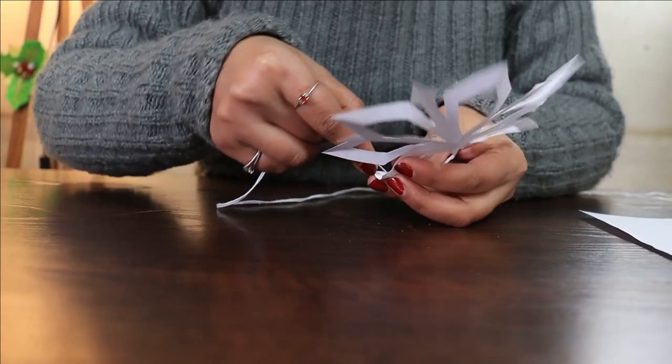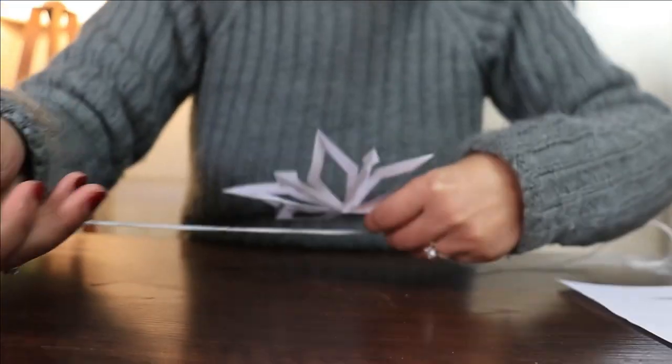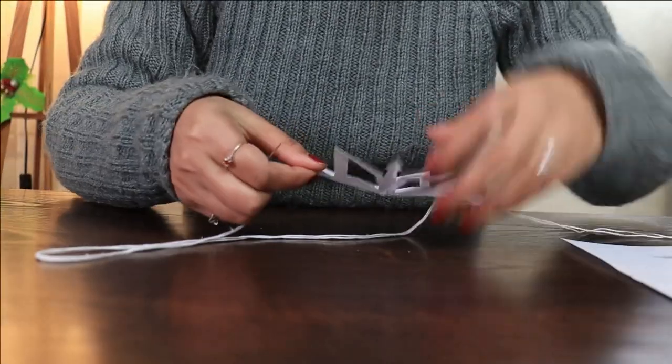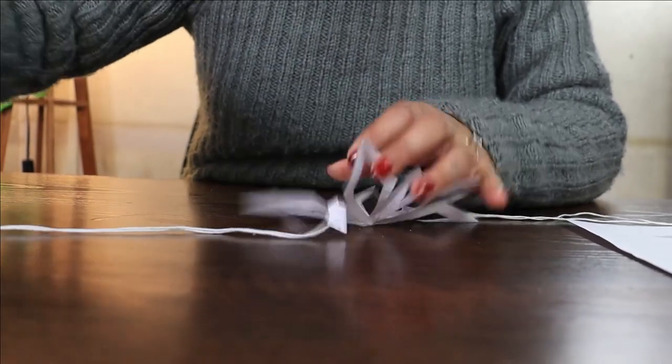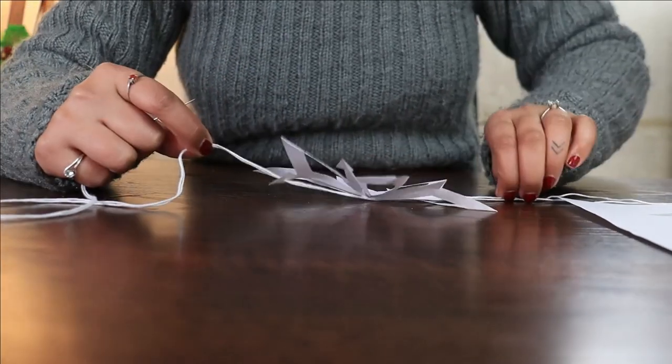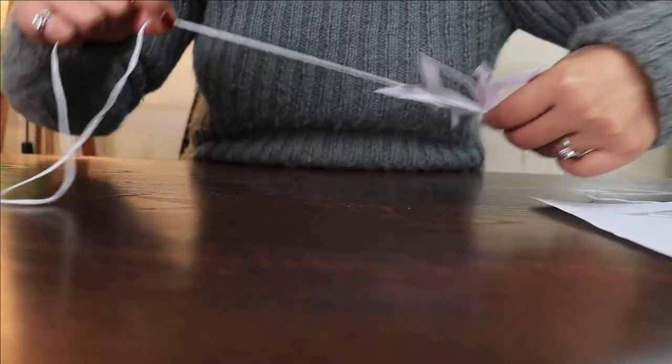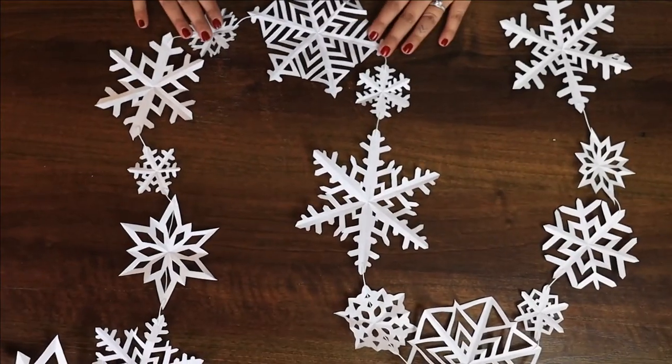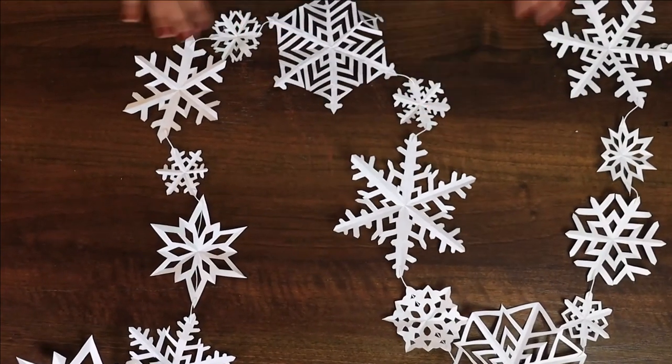Put it on one end, thread it through to the other end and thread it further. You can make as many patterns as you want. I have gone with different snowflake patterns here. There you go. Your snowflake garland is ready to add on your windows, doors and empty walls.